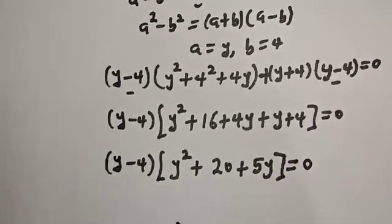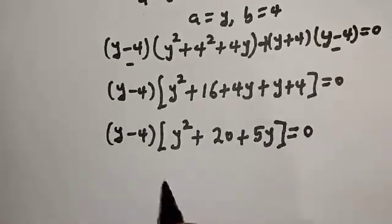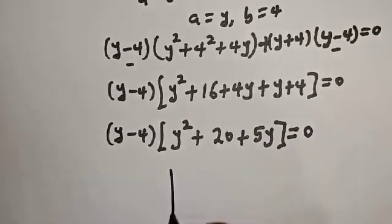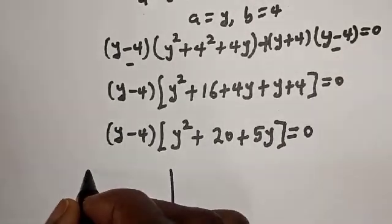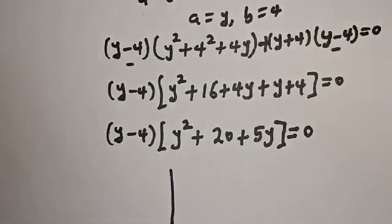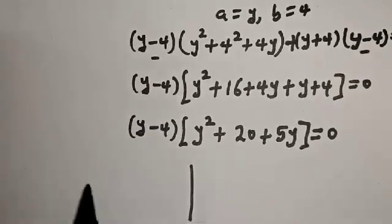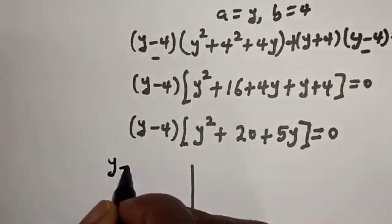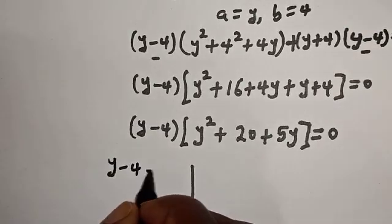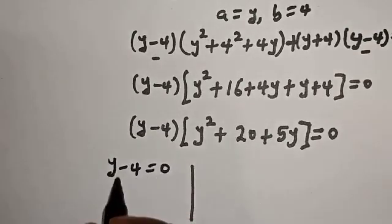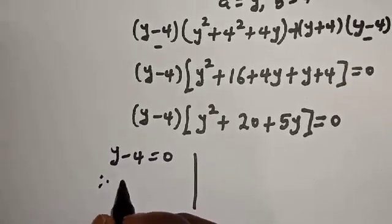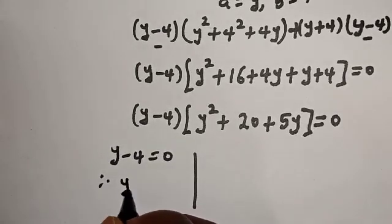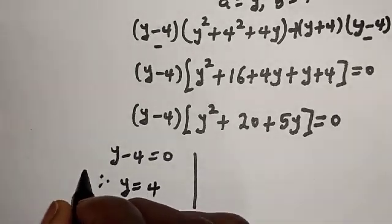There are two cases here. The first case is y minus 4 equals 0. Therefore, y is equal to 4.